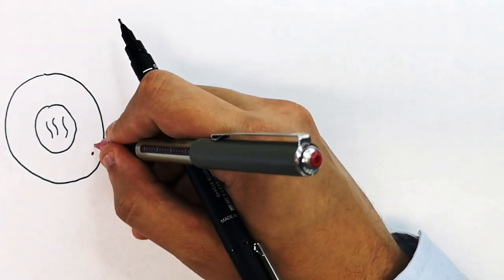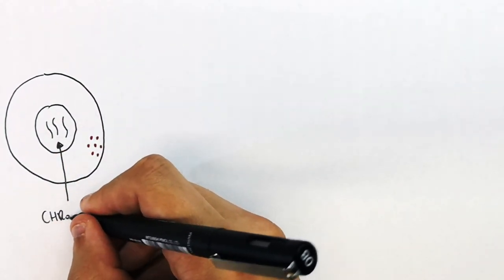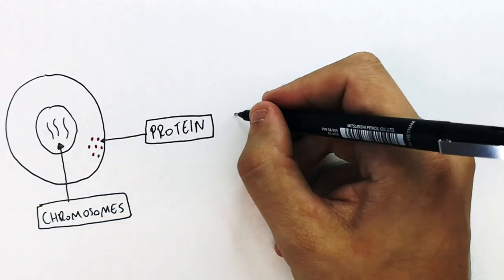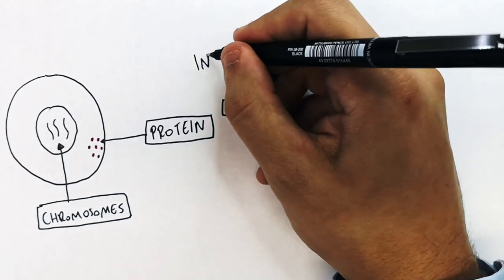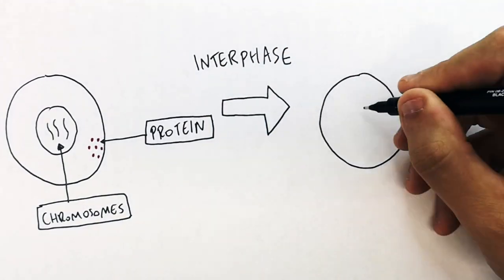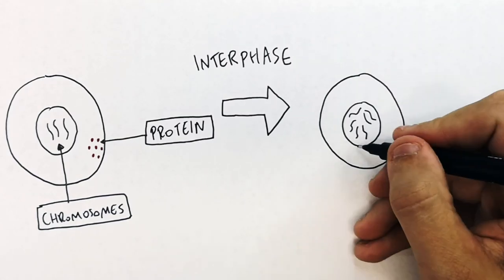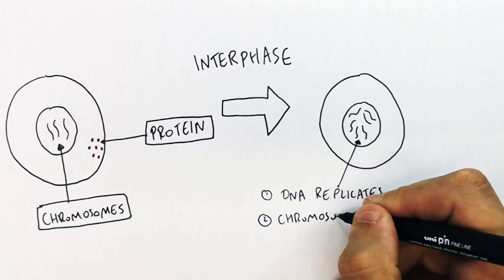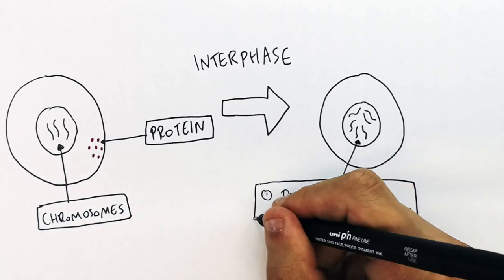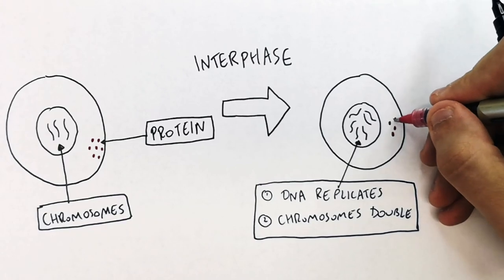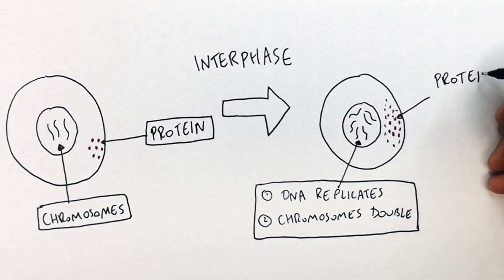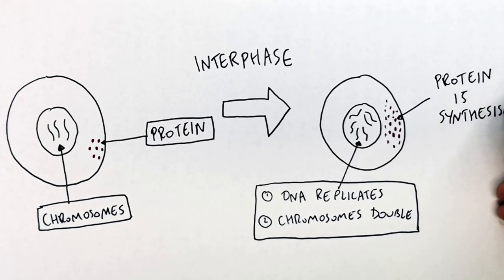I'm drawing a cell here, which shows the nucleus, chromosomes, and proteins. I've drawn the chromosomes in the nucleus and the proteins in the cytoplasm. The first stage of the cell cycle is interphase. Interphase is where the DNA replicates — the chromosomes are doubling. Also, for new cells you need more protein, so protein is synthesized during interphase. Those are the two things that happen to begin with.